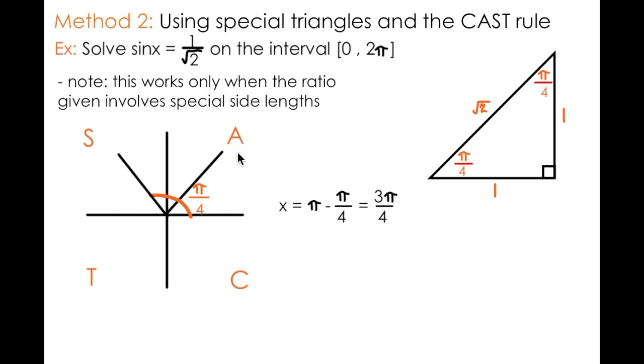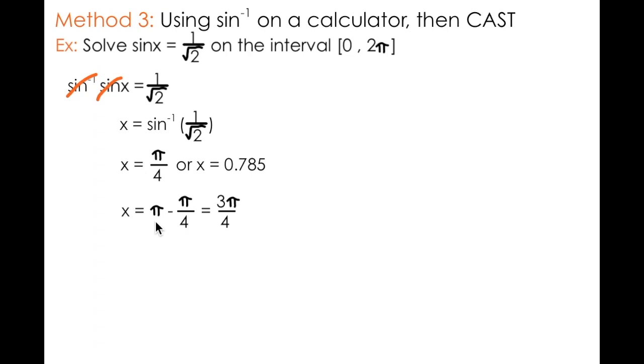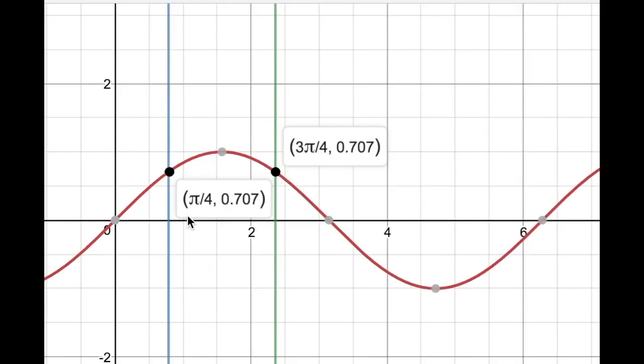Remember our first angle was in the first quadrant, where all trig ratios are positive, and the second angle is in the second quadrant, where only sine is positive. So if we take pi, or half a rotation of 2 pi, and subtract out the first angle, what we're left with is 3 pi over 4. And so those were the two solutions that we obtained using the previous method.